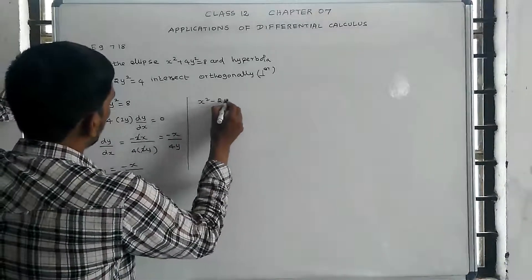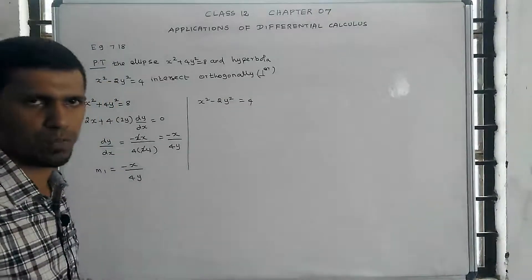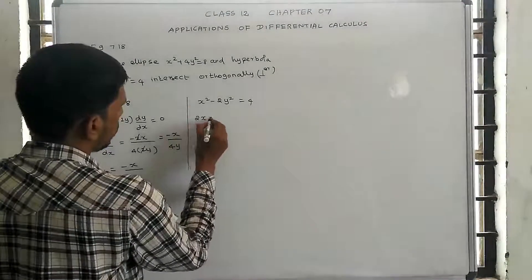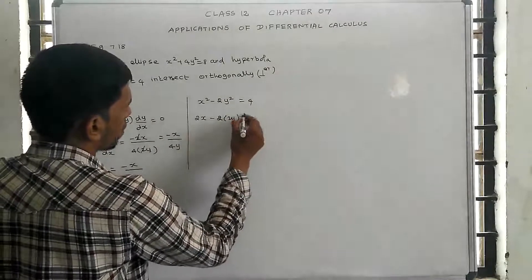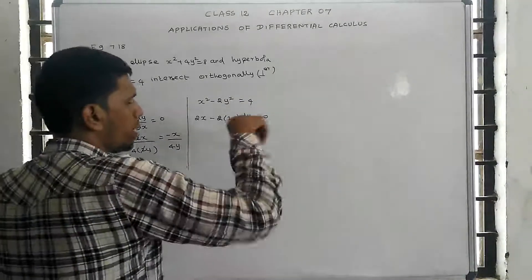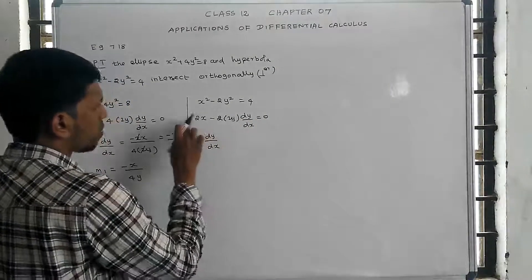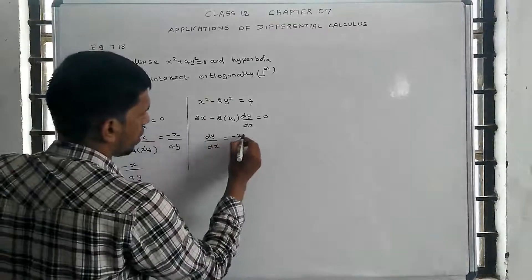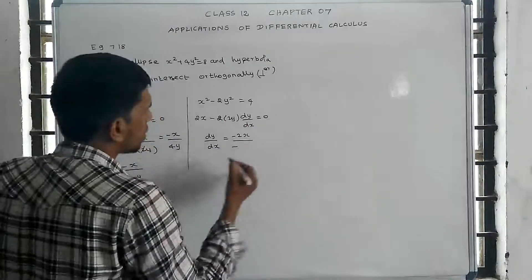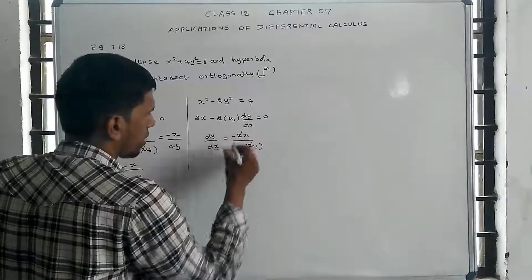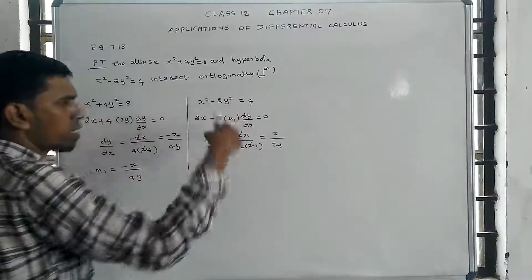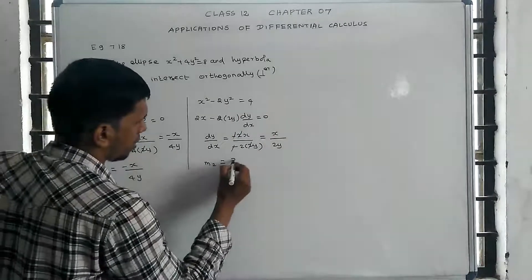For the second curve, x squared minus 2y squared equal to 4, we differentiate with respect to x: x squared gives 2x, and minus 2y squared gives minus 2 into 2y into dy by dx, and the constant is 0. Solving for dy by dx: dy by dx equals 2x divided by 2 into 2y, so 2 cancels, giving x divided by 2y. So m2 equals x divided by 2y.